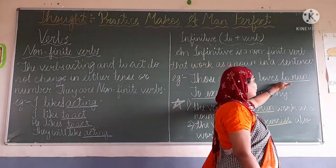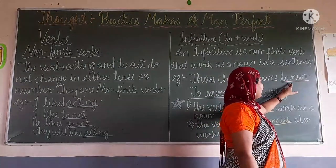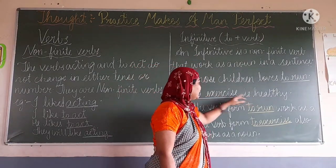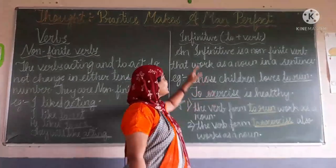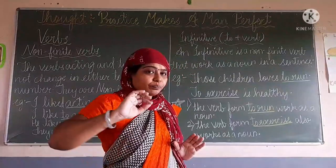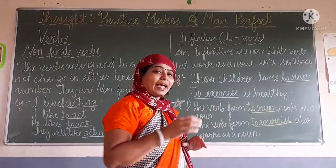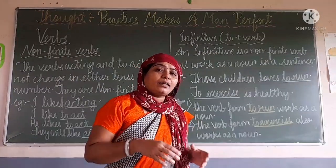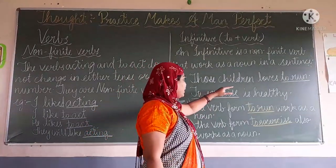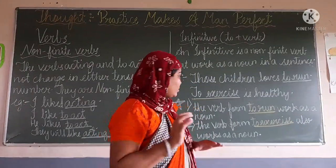'Those children love to run.' 'To run' means TO plus verb, so it becomes 'to run' — this is the infinitive verb. Then 'To exercise is healthy.' TO plus exercise makes the infinitive verb. The infinitive is similar to a non-finite verb, but what it does is work not as a verb but as a noun.